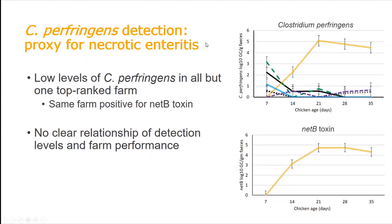When we looked at Clostridium perfringens detection as a proxy for necrotic enteritis, we found very low levels — we were expecting a higher detection rate. Only one top-ranked farm was positive for Clostridium perfringens, and that was also the only farm positive for NetB toxin. We know NetB toxin is a predisposing factor conferring virulence to Clostridium perfringens strains, but there were no gut symptoms or clinical signs on that flock — again, no clear relationship between detection level and performance.